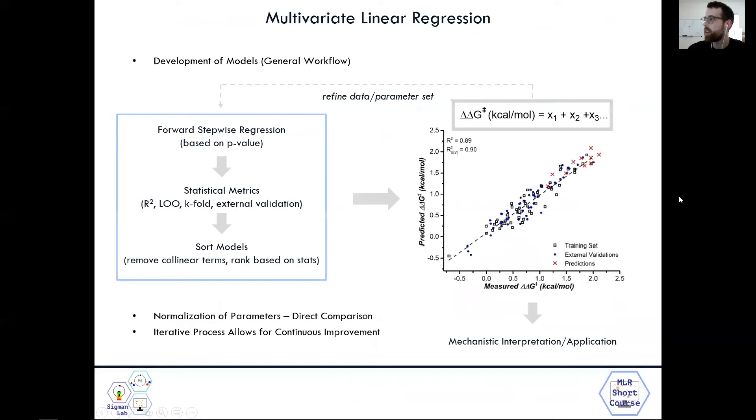Next, looking at our multivariate linear regression workflow, we can start with this forward stepwise regression, which is the algorithm that is used to start to build models. And what is used is the p-value of each parameter, how we judge its statistical significance when it's adding more parameters to the model. So this is how you get the idea of how many parameters are added to each model and how many are needed for a good correlation if one can exist.